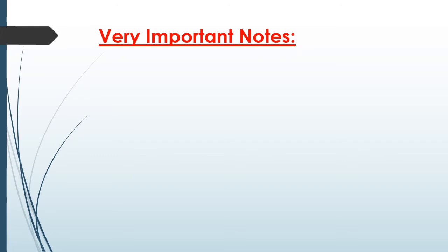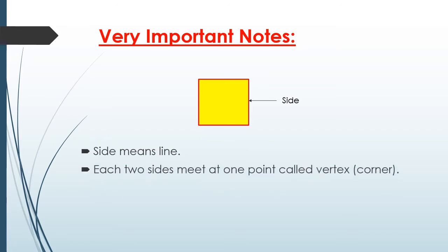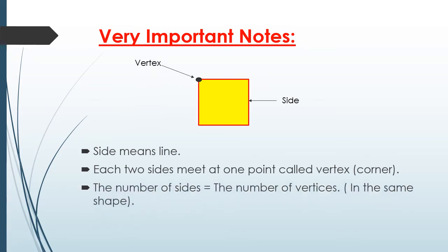You have to know something very important. We will say lines as sides — side means line. Each two sides meet at one point called a vertex, or corner. The number of sides equals the number of vertices in the same shape.